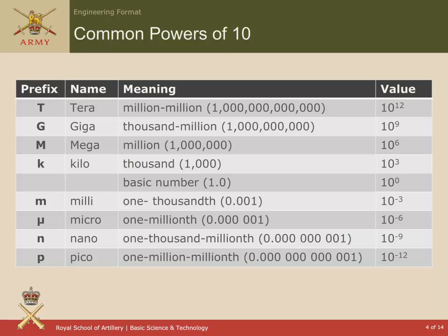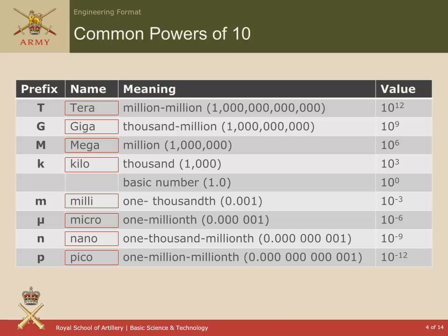So: tera, giga, mega, kilo — notice that kilo has a lowercase k when it's written as a prefix — milli, micro, nano, and pico for the very small values.